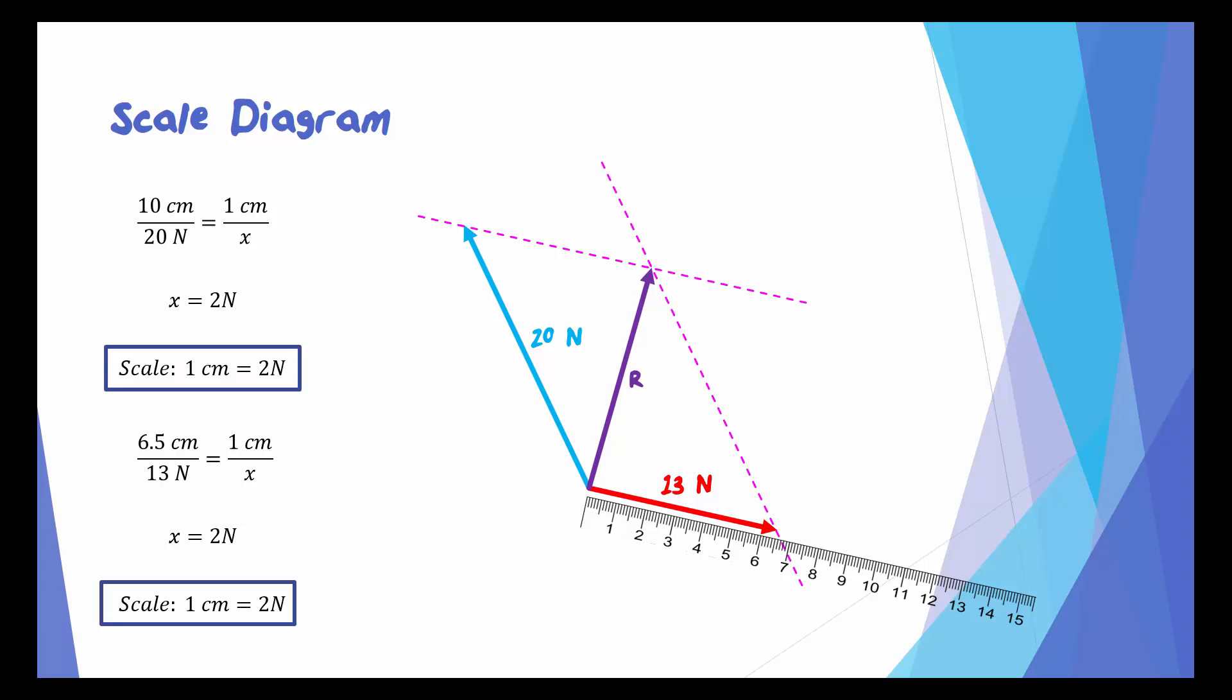Now we can measure the length of the resultant and use that scale to determine its magnitude. It looks like that resultant is about 7.5 centimeters long. So if we set up a similar proportion, we'll find that the resultant is 15 Newtons.